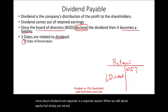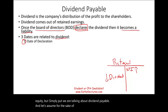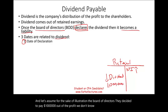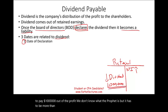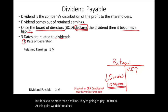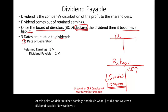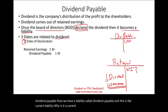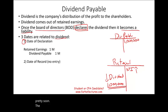For illustration, assume the board of directors decided to pay $1 million out of profit. We debit retained earnings and credit dividend payable for $1 million. Now we have a current liability called dividend payable — it's current because it will be paid pretty soon. The second important date is the date of record.